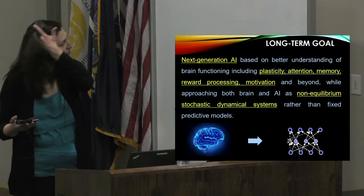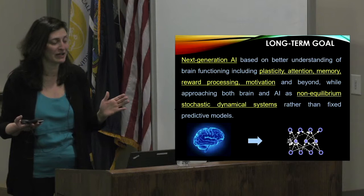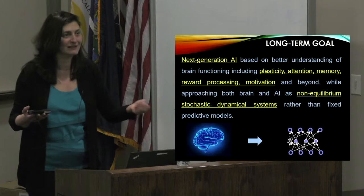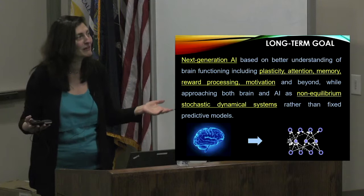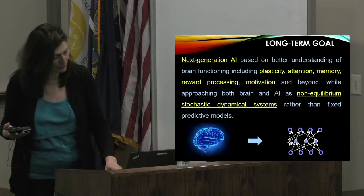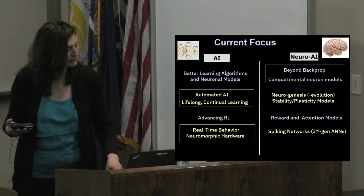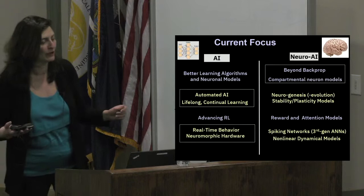That approach is still at the level of pseudocode for an algorithm for doing interdisciplinary science, but we're getting there. Long-term high-level goals include modeling plasticity, attention, and memory, more biologically plausible reward processing than in simple reinforcement learning models, and viewing artificial systems as non-equilibrium stochastic dynamical systems just like biological brains — though that remains a long-term goal.